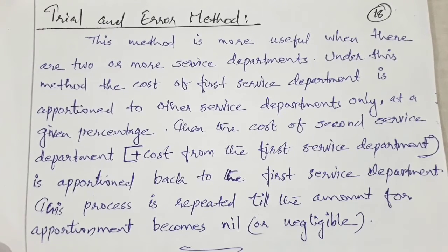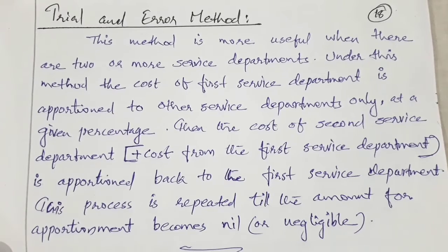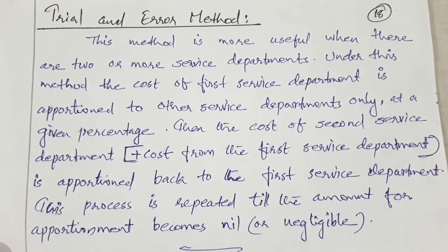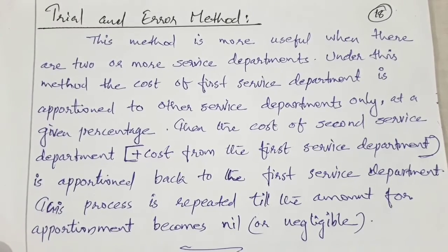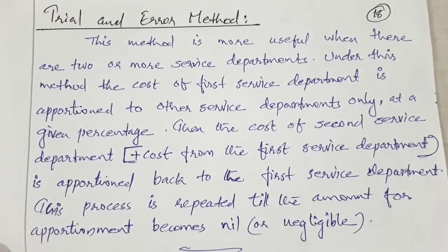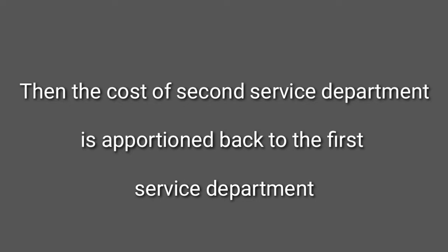Suppose there are two service departments, X and Y. The cost of the first service department is distributed. Then the cost of the second service department is apportioned back to the first service department, and this process is continued or repeated until the amount to be apportioned from the second service department becomes zero.